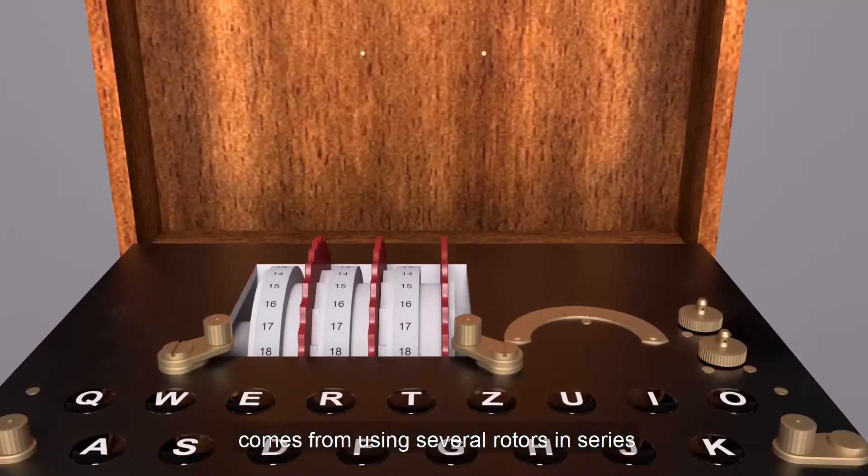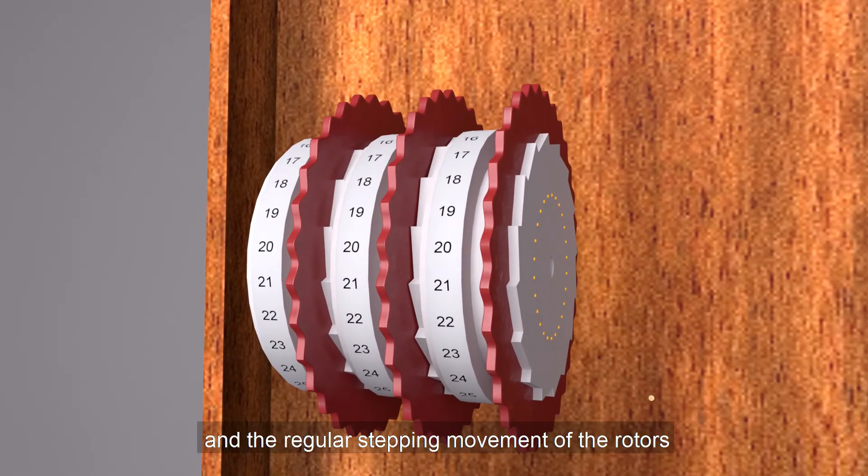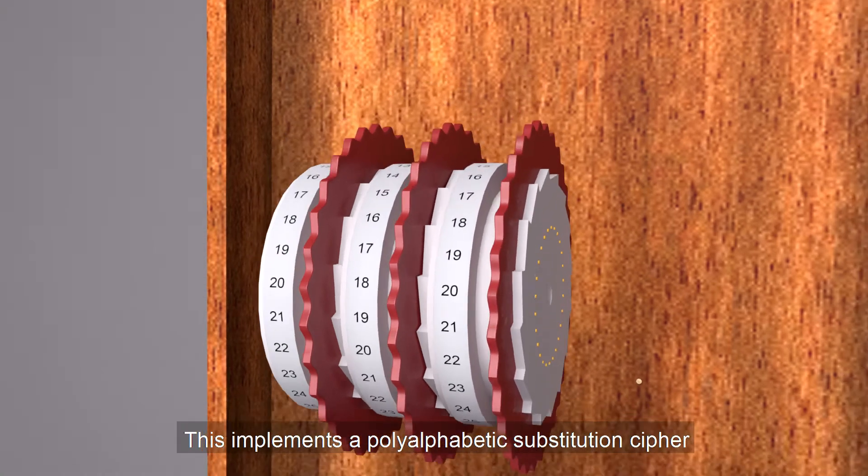Enigma's security comes from using several rotors in series, usually three or four, and the regular stepping movement of the rotors. This implements a polyalphabetic substitution cipher.